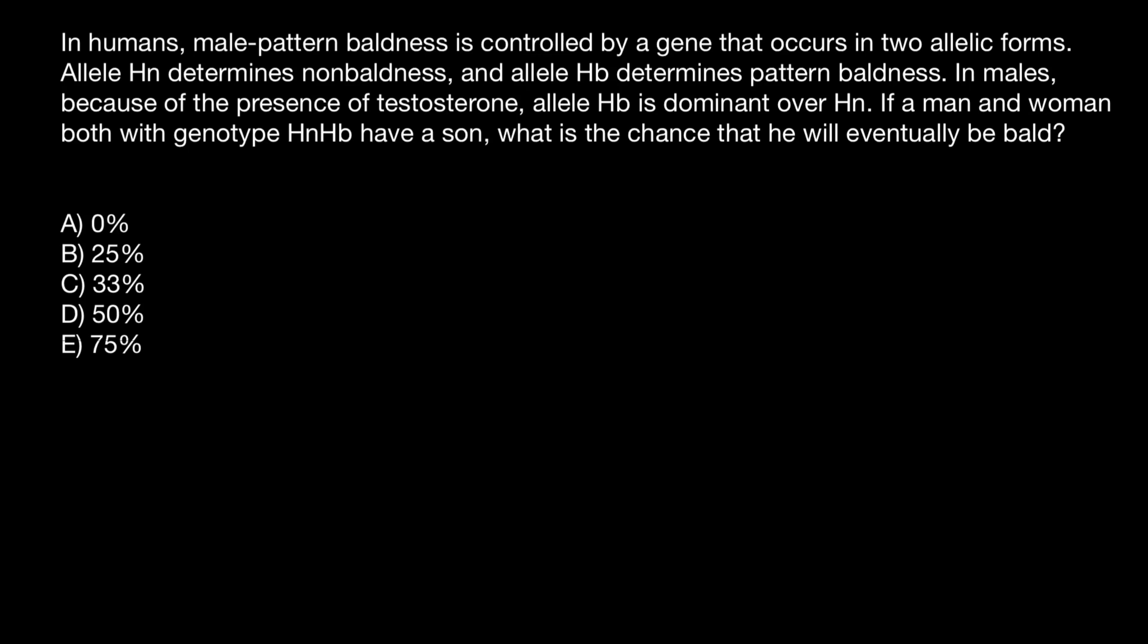Hello and welcome to Nikolai's genetics lessons. Today's problem is: In humans, male-pattern baldness is controlled by a gene that occurs in two allelic forms. Allele HN determines non-baldness and allele HB determines pattern baldness. In males, because of the presence of testosterone, allele HB is dominant over HN.